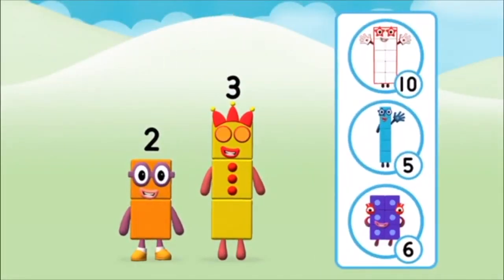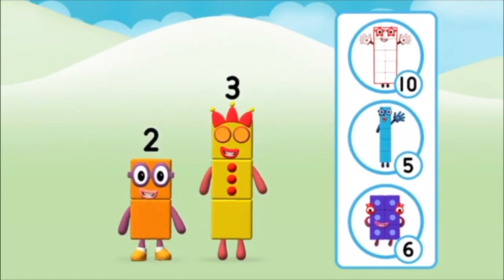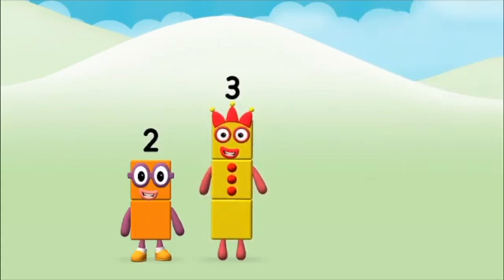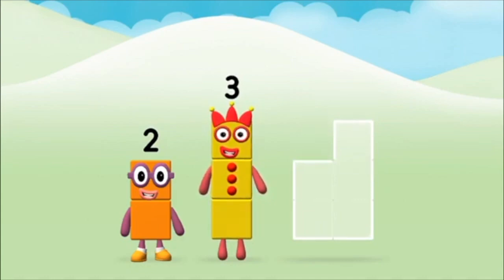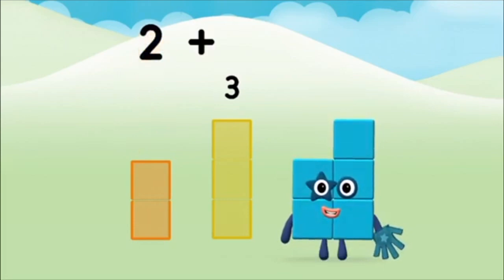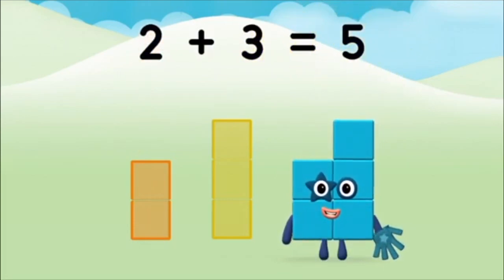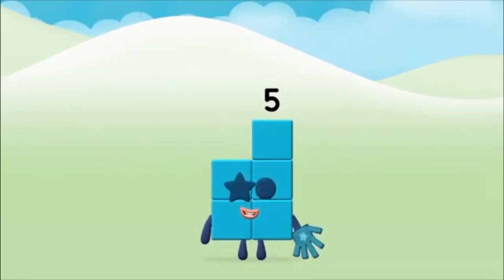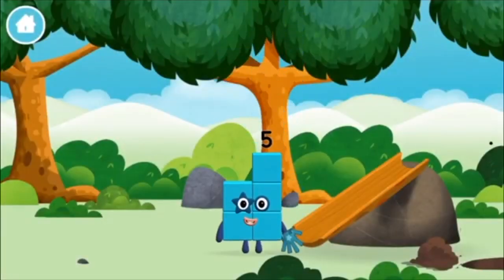What number block will you make when you add these two number blocks together? Correct! You chose the right answer! Now can you add the number blocks together? Three, two — two plus three equals five! Marvelous — you made number block five! You made a new number block!